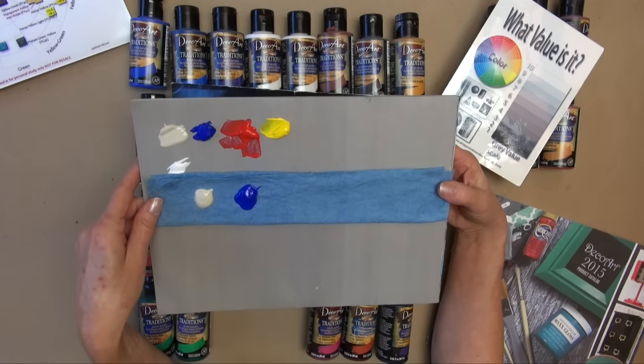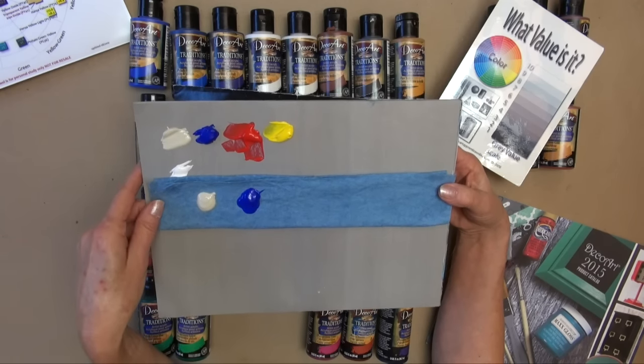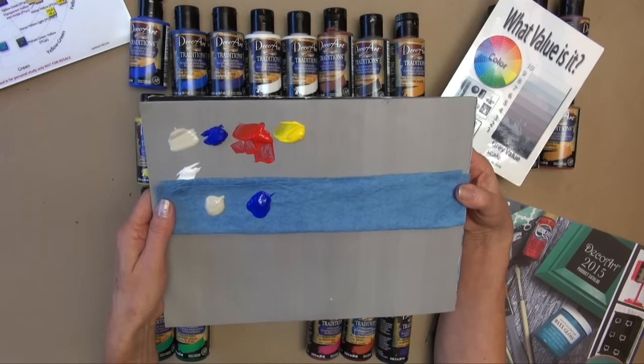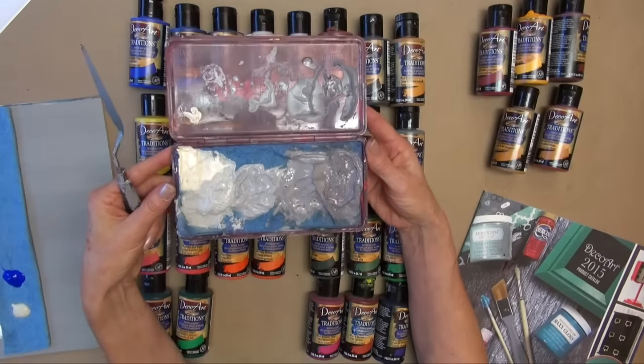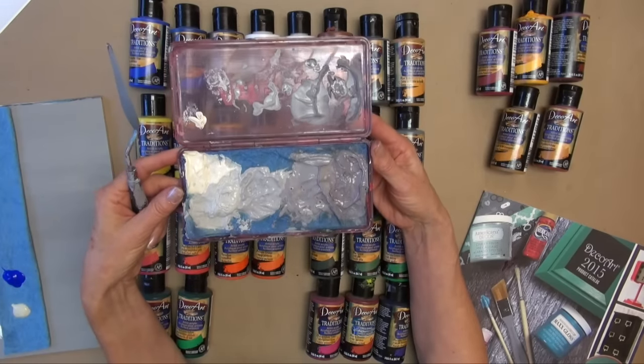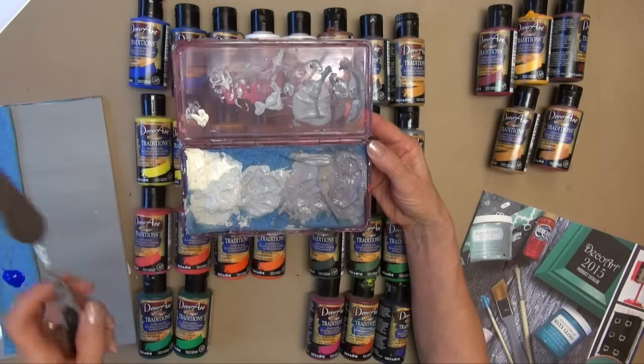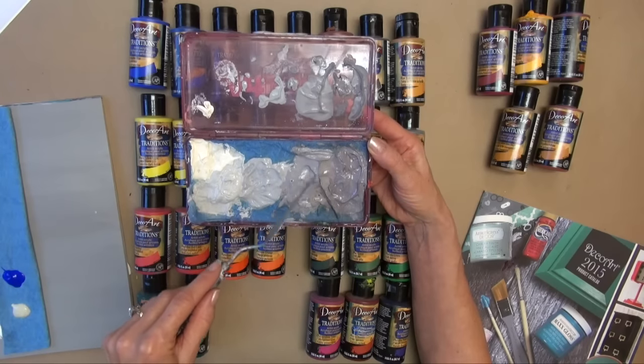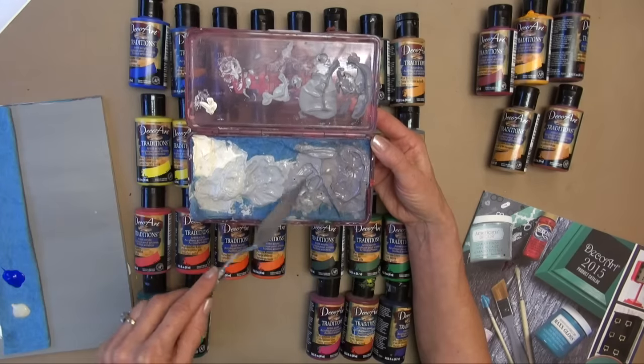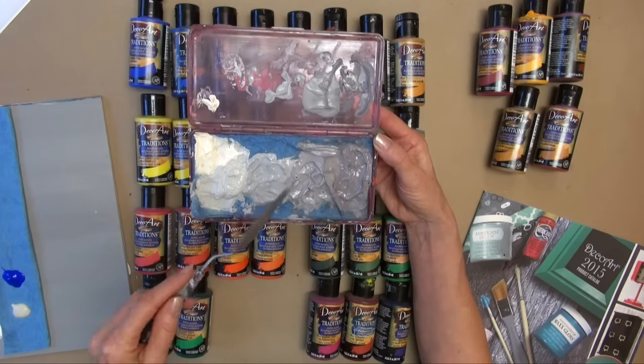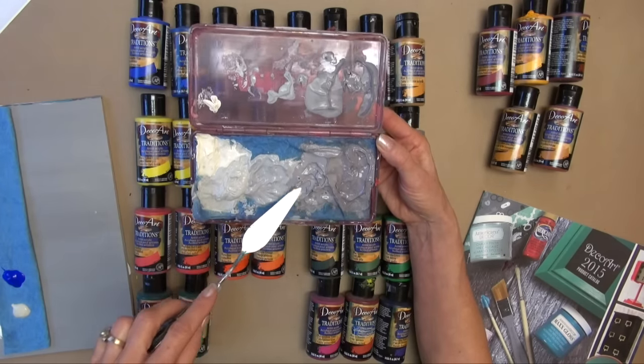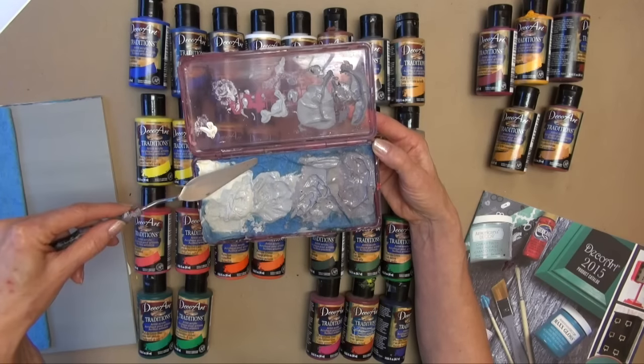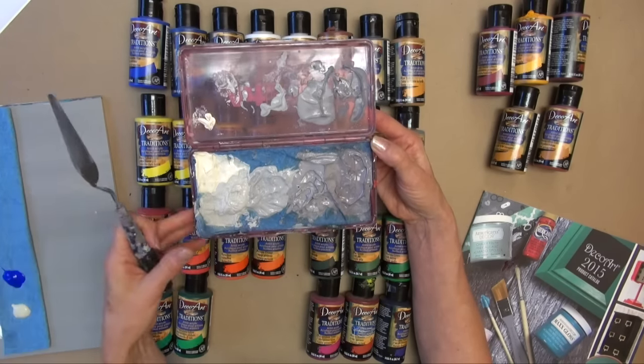Now this all depends on your temperature where you live, of course, how long it will stay moist on your palette. If you want to keep your mixed paints for a period of time, you can put them in what's called a wet palette container. I've had them in here for several months in my refrigerator, and they're just as creamy as they were when I put them in there. You do have to make sure that this paper towel stays wet.